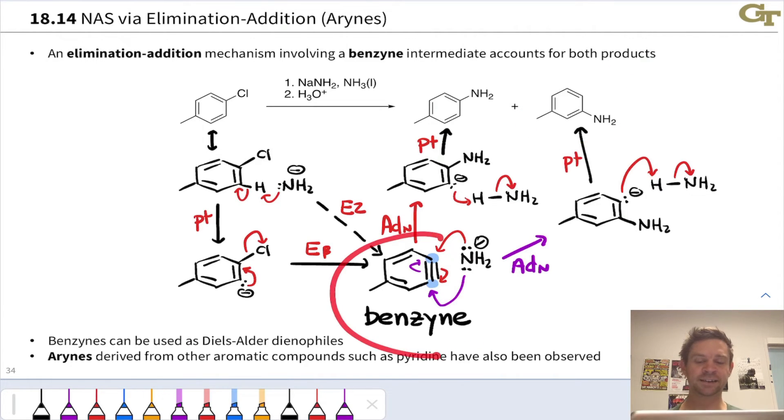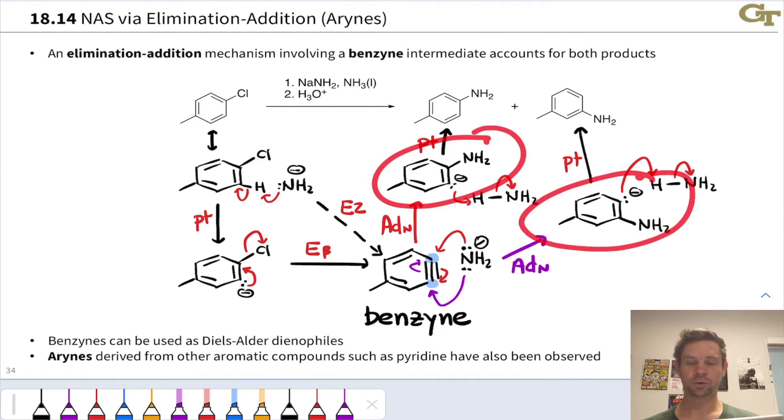So this benzyne intermediate is derived from first elimination via either proton transfer and beta elimination or direct E2, followed by addition of the nucleophile, which is going to establish that nucleophile-carbon bond, either this structure or this structure, and then a proton transfer from NH3 gives the neutral product.